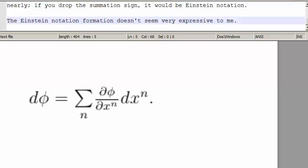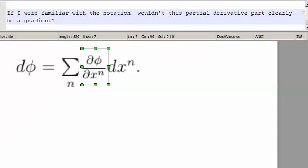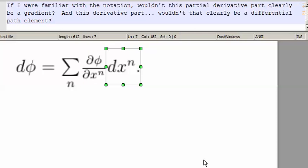The Einstein notation formation doesn't seem very expressive to me. Perhaps it should be, though. If I were familiar with the notation, wouldn't this partial derivative part clearly be a gradient? And this derivative part, wouldn't that clearly be a differential path element?